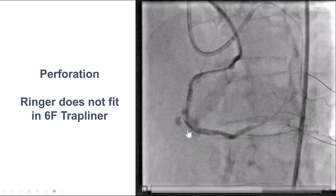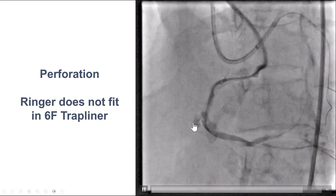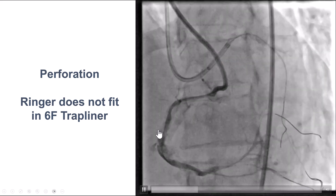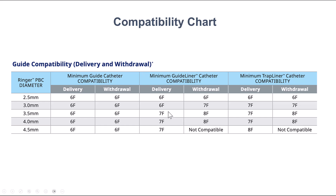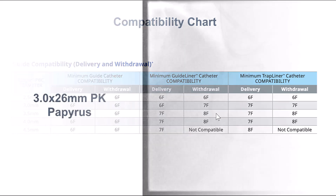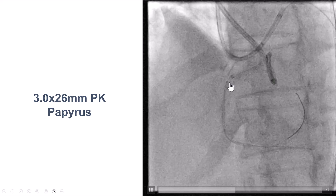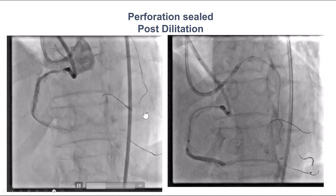We then placed two drug-eluting stents, but unfortunately we encountered a mid-right coronary artery perforation, likely related to the heavy calcification. We thought it was not a very large perforation and potentially could use a prolonged balloon inflation with a ringer balloon. However, we had a 6 French GuideLiner and could not deliver it — it turns out that to deliver a 3.5 mm ringer balloon through a GuideLiner catheter, you need at least a 7 French guide extension. What we did eventually was deliver a PK Papyrus through the GuideLiner. It was a little tricky, but having a second guide wire helped, and we were able to get it down the RCA and deploy it, which successfully sealed the perforation.